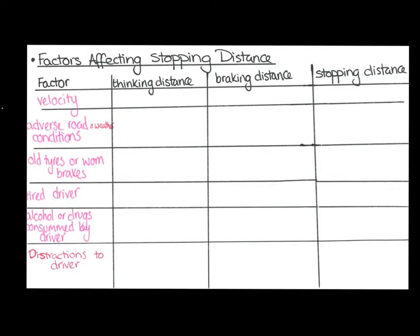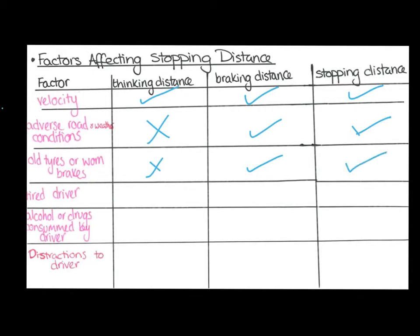If we increase the velocity, it changes the thinking distance, the braking distance, and therefore the stopping distance. Adverse road and weather conditions won't change the thinking distance — you still travel the same distance while thinking — but will change the braking distance, because an icy or wet road means less friction, a smaller braking force, and a bigger braking distance. Old tyres or worn brakes won't change the thinking distance but will increase the braking distance, since there's less friction or a reduced braking force.